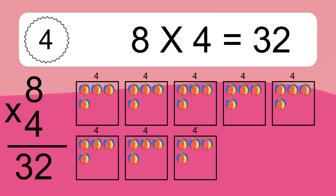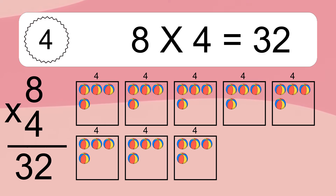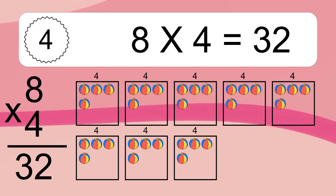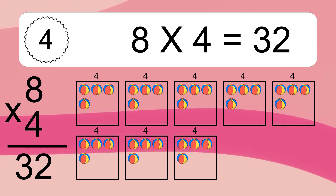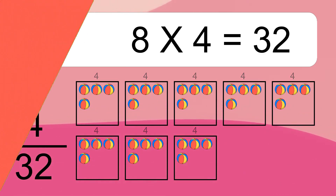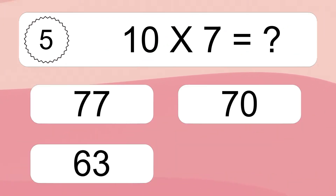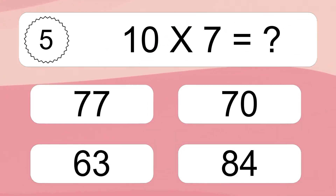We have 8 boxes and each box has 4 colorful balls inside. If you count all the balls in all the boxes together, you will have 8 times 4 balls. This equals 32 balls.